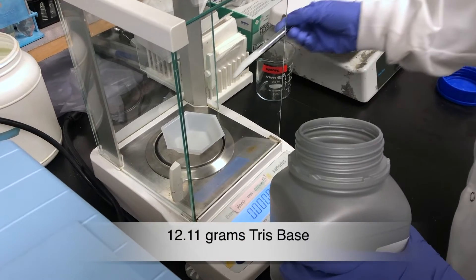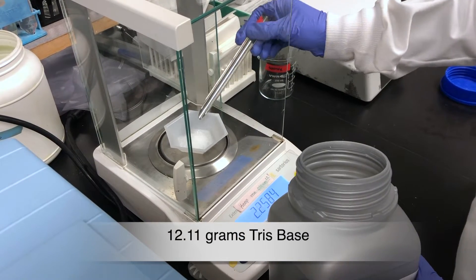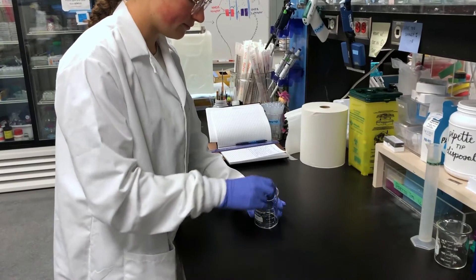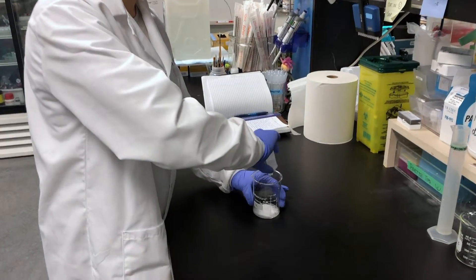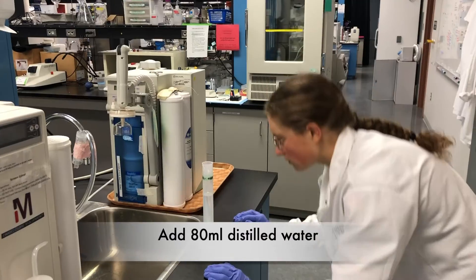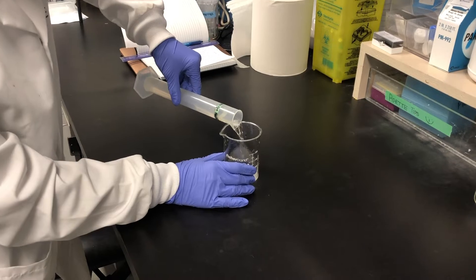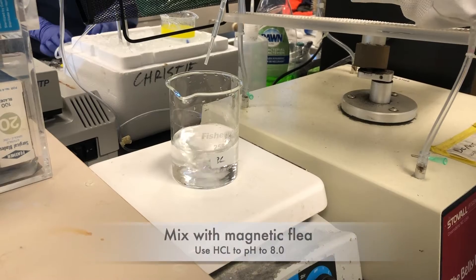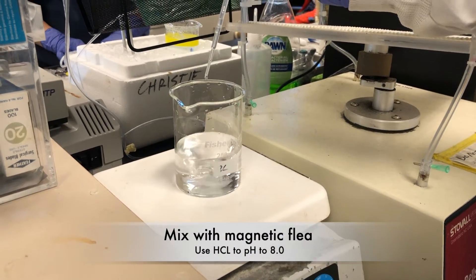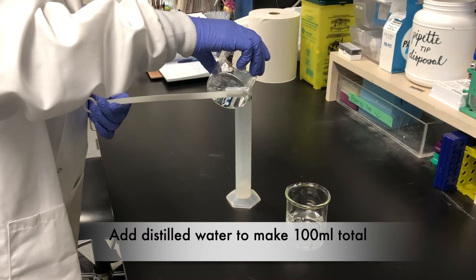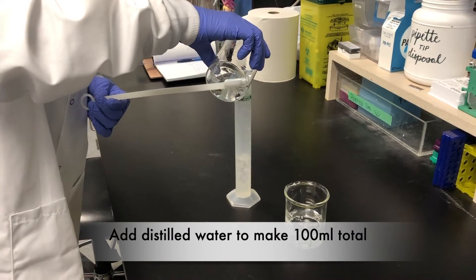We will first prepare the TE buffer. If you have stock buffers, you can skip this step. Measure 12.11 grams of Tris base and 80 ml of distilled water. Mix using a magnetic flea, pH to 8.0 using HCl, top to 100 ml total using distilled water.